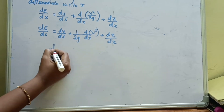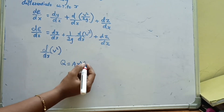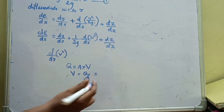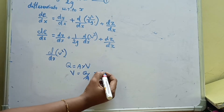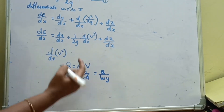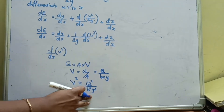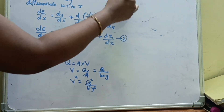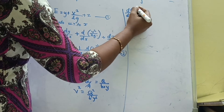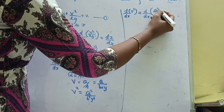Now we find the value of d/dx of v-squared. From the discharge formula, Q equals area times velocity. For a rectangular channel, V equals Q divided by A, and area equals breadth times depth, so V equals Q divided by (B times y), giving Q/By. Therefore v-squared equals Q-squared divided by (B-squared times y-squared). We substitute this and differentiate: d/dx of v-squared equals d/dx of Q-squared divided by (B-squared times y-squared).